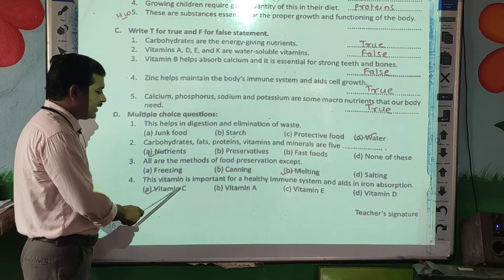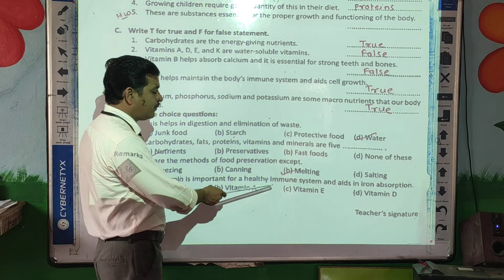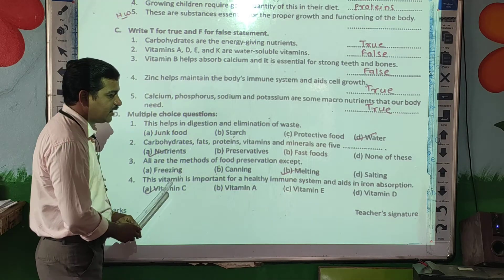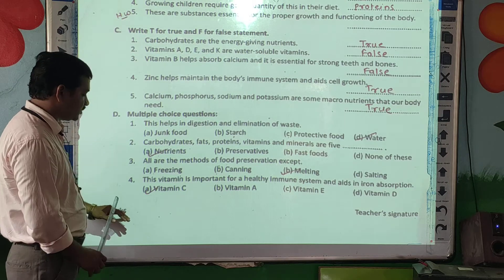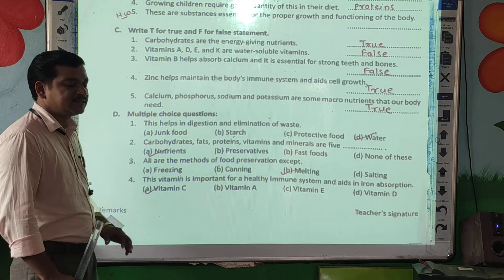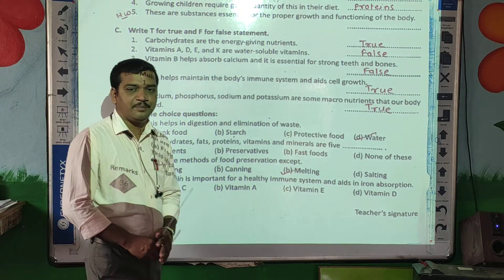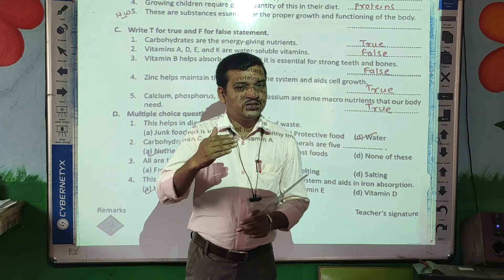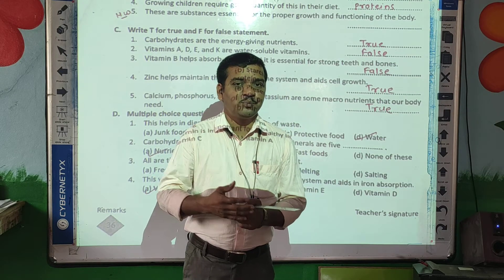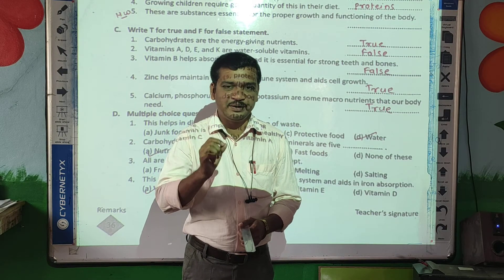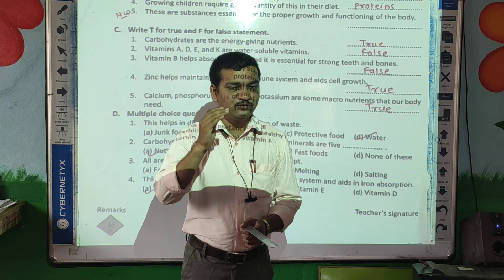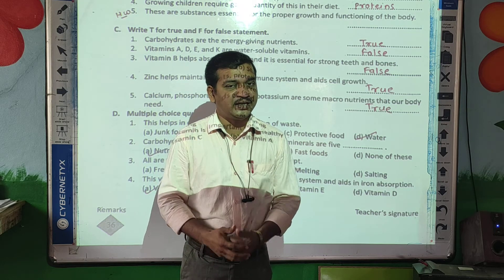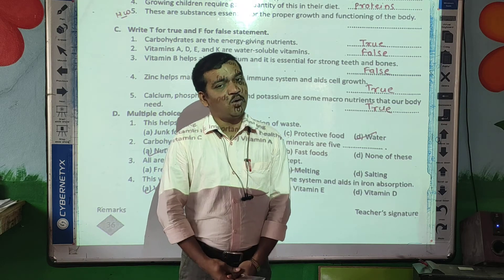This vitamin is important for a healthy immune system and helps in iron absorption. The answer is vitamin C. Students, this way you can do practice at home, but keep in mind — before doing this worksheet, you should read the lesson very carefully at home.